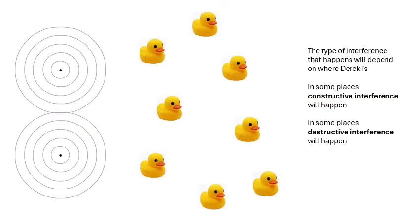The type of interference — whether it's constructive or destructive — depends on where the duck is. It depends on his position. In some places it's going to be constructive, and Derek's going to be bouncing up and down like crazy. In some places it's going to be destructive, and Derek will hardly move at all. Looking at this diagram, anywhere along that line it's going to be constructive, and then perhaps over here it'll be destructive. So Derek over here won't do very much, and then there'll be other places where it's constructive and destructive.